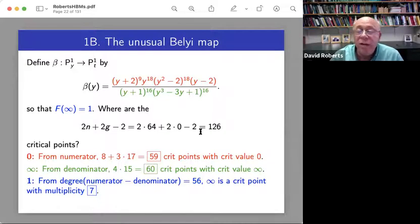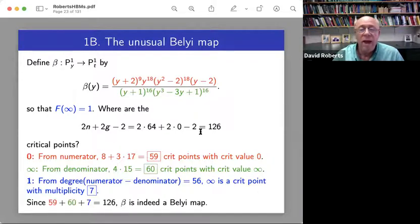So now what's sort of the only thing interesting on this slide is, if you take the numerator and subtract off the denominator, numbers have been contrived. So the degree is 56. And so that means infinity is a critical point with multiplicity seven.